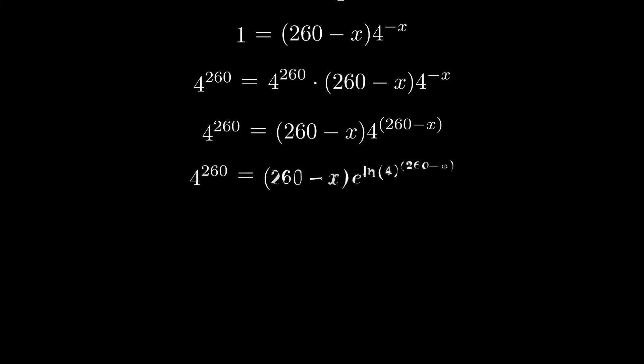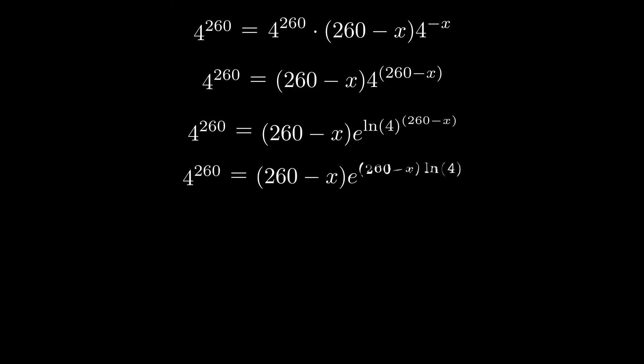Once we insert that e to the ln, we can use another property to drop the exponent down. And we're only one move away from the repetition that we want.